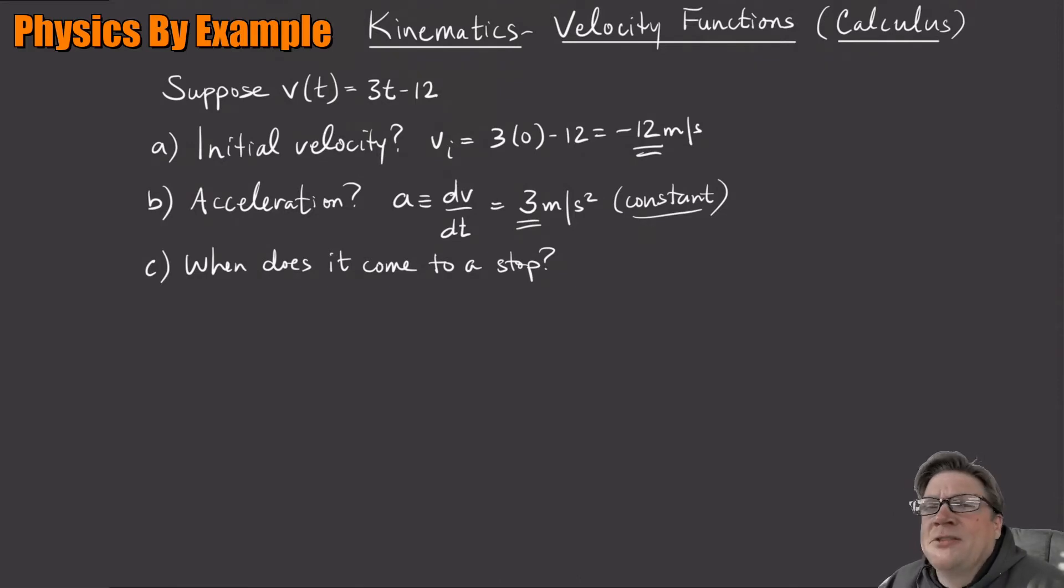Let's make sure that's right. What does it mean to come to a stop? That would be v equals 0. So this would be 3t minus 12, so 3t equals 12.